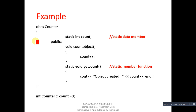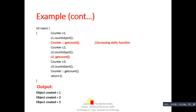This example contains both a static variable which is count and a static function which is getCount. The getCount function can only process static variables, but the countObject function can access both static and non-static variables. Notice that in this example, getCount is called with the name of the class using the scope resolution operator, but it can also be called using the name of an object. So a static function can be called through the class name or through an object.